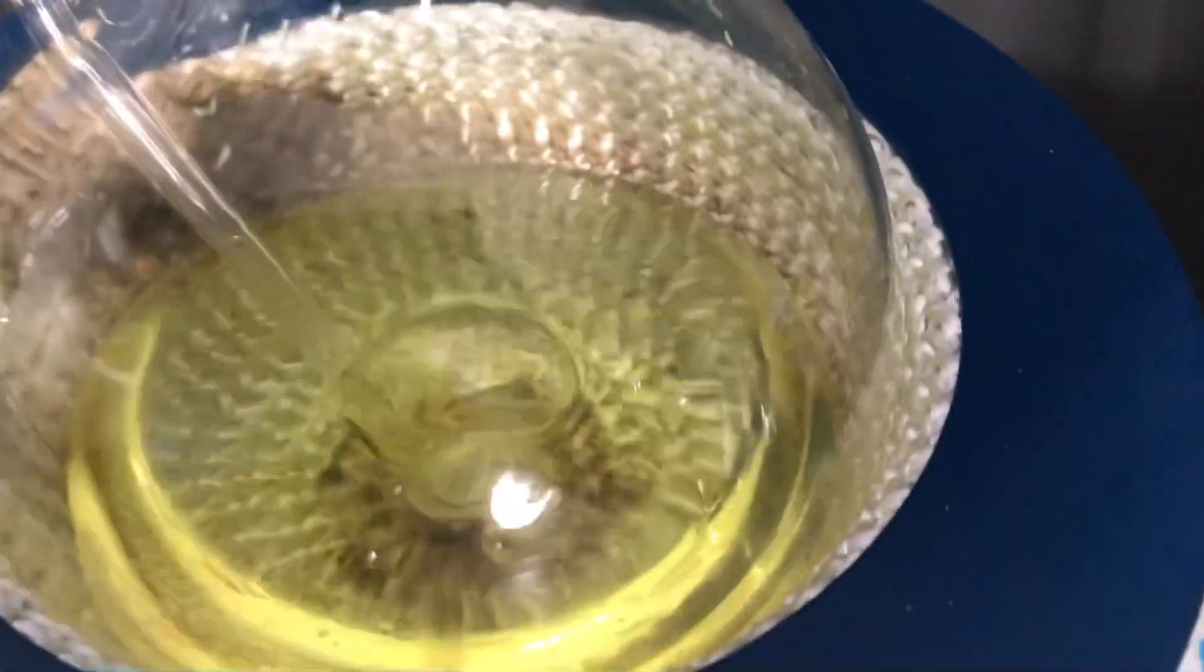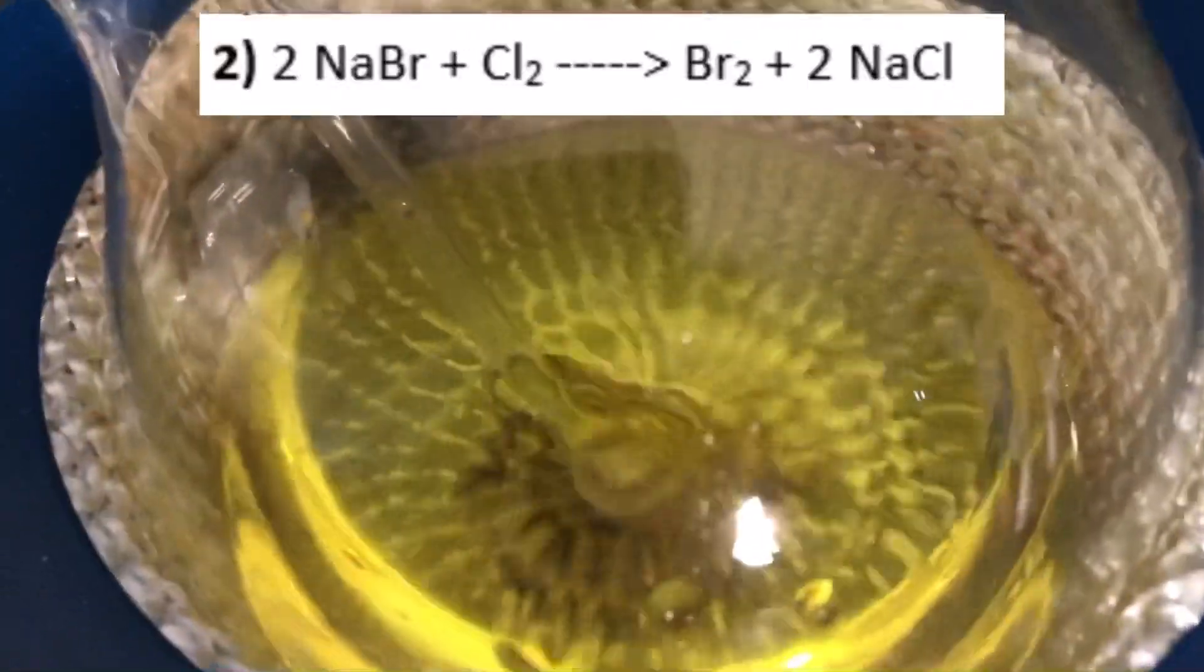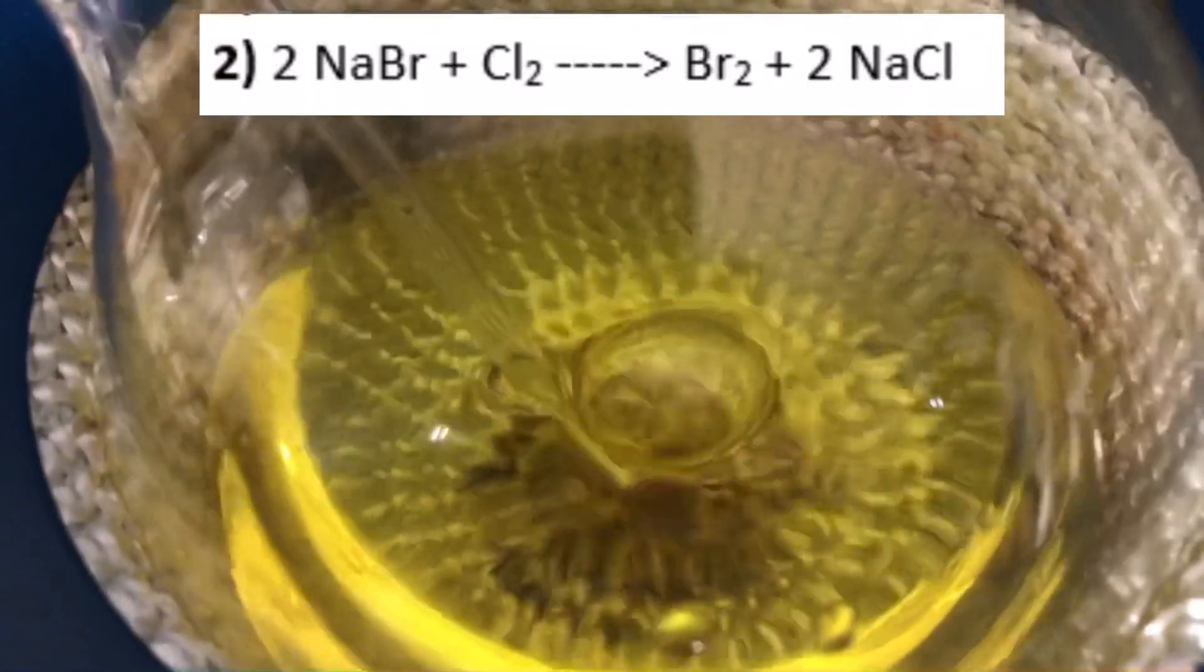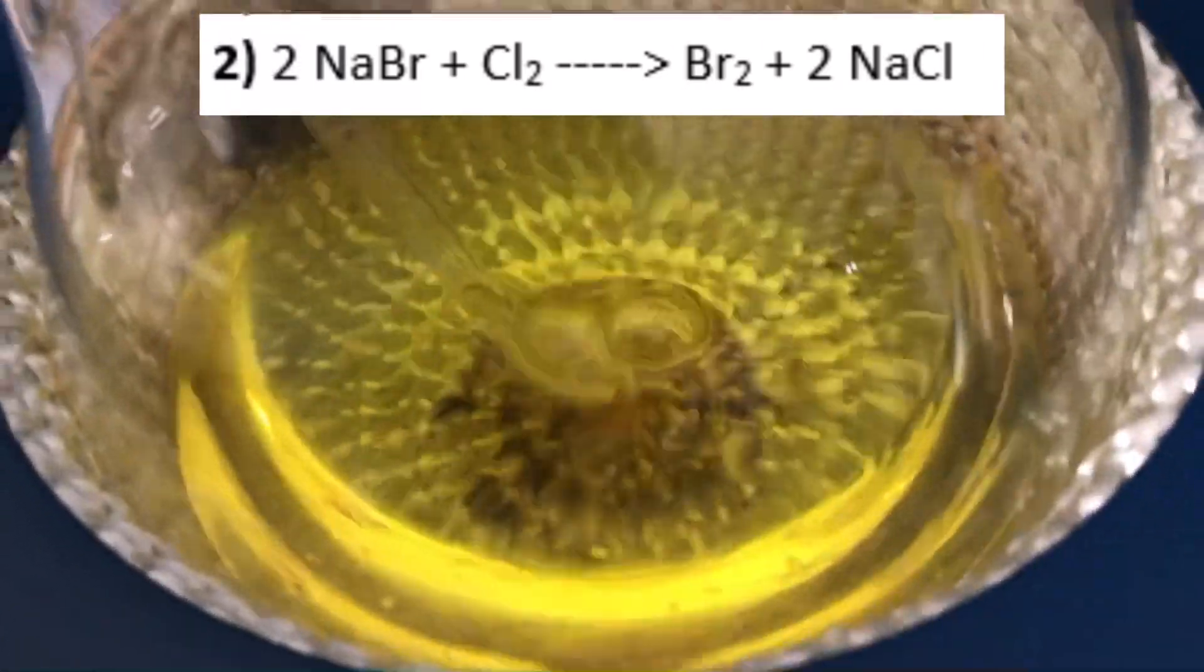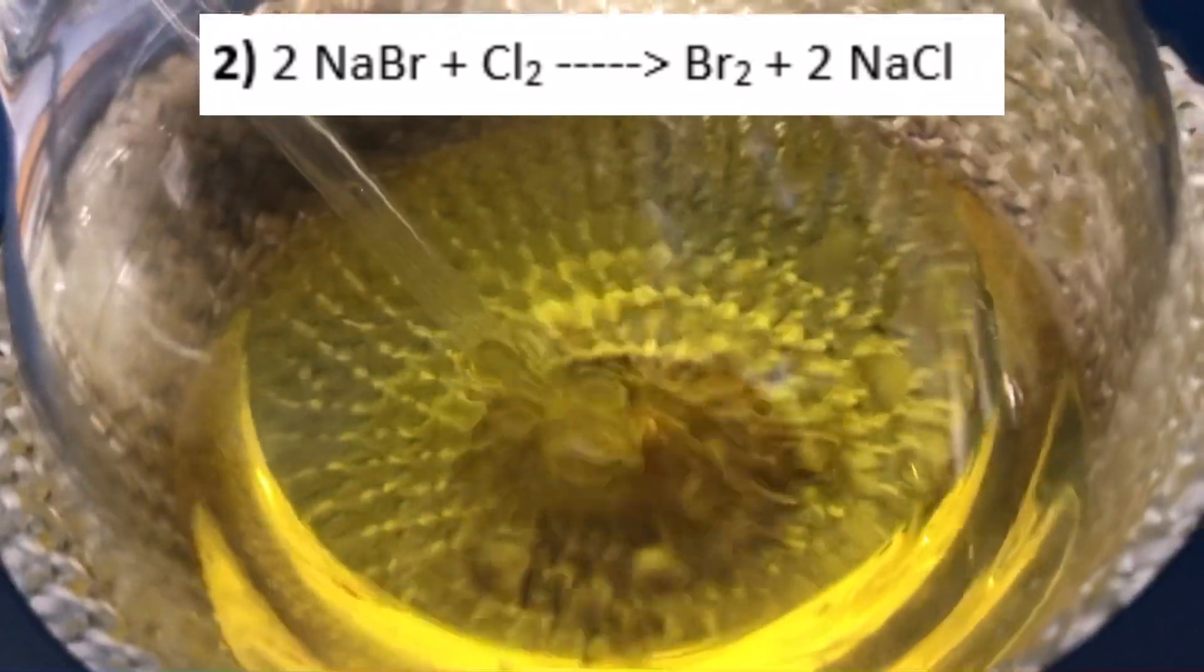In the beginning air is purged out of the apparatus and no chlorine gas enters the solution of sodium bromide. But when the chlorine enters the sodium bromide solution you can immediately see a color change. The solution becomes yellow and later on reddish. This is because another reaction takes place here. The sodium bromide reacts with the chlorine gas to form elemental bromine and sodium chloride. The elemental bromine leads to the color change.